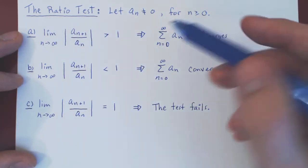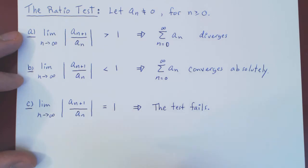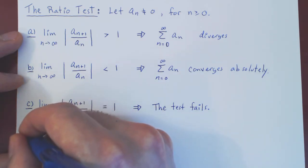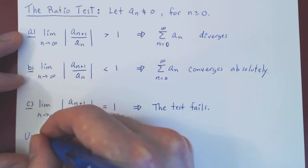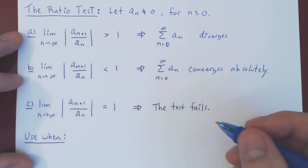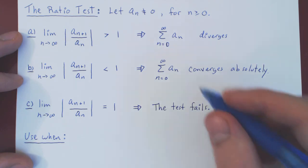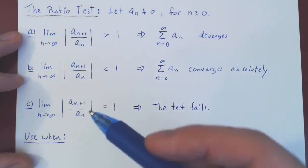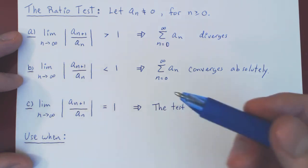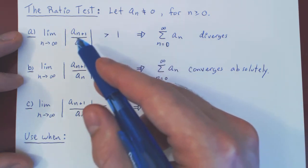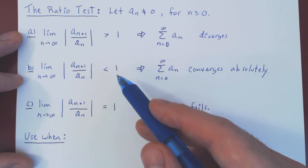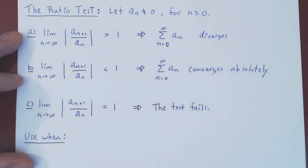An actual question to ask is: when should we use the ratio test? And the answer is, the ratio test, in order for it to work—to return a ratio in the limit that is larger than 1 or less than 1—needs rapidly growing functions, which are exponential functions, factorials, and n to the n.